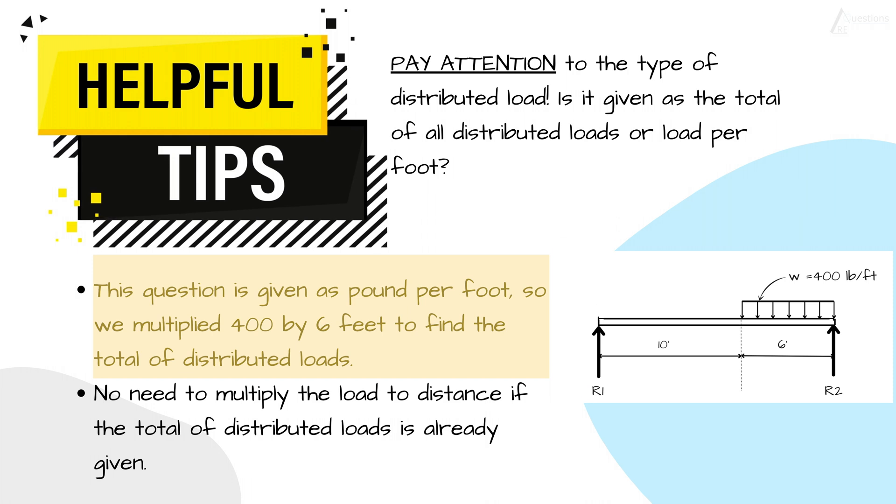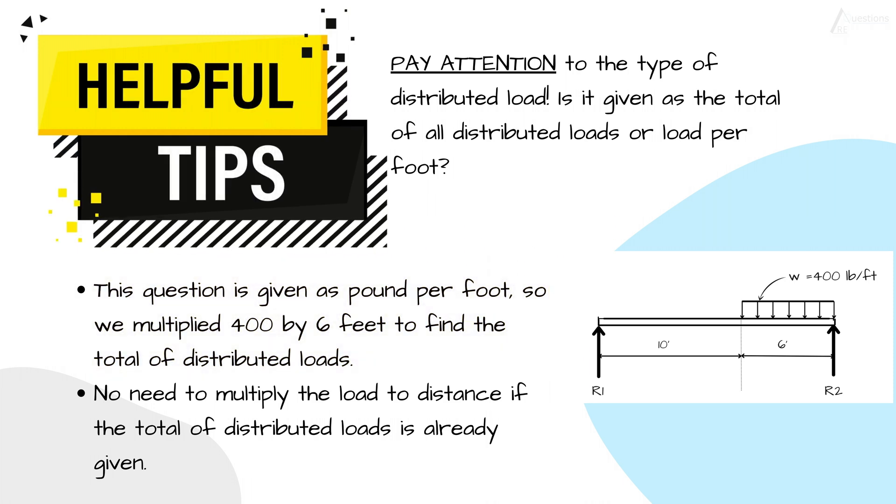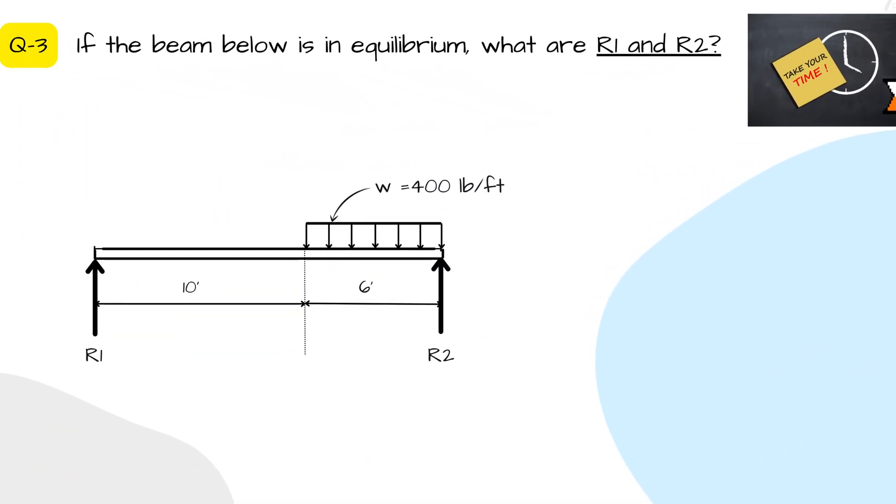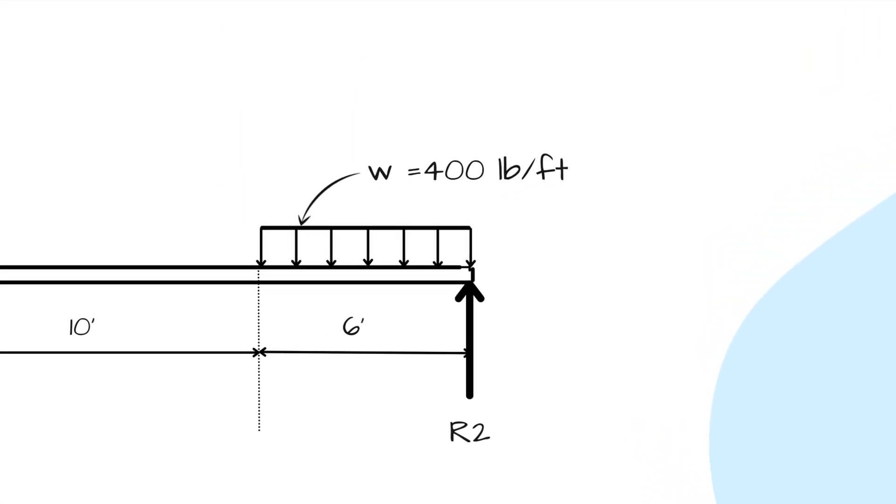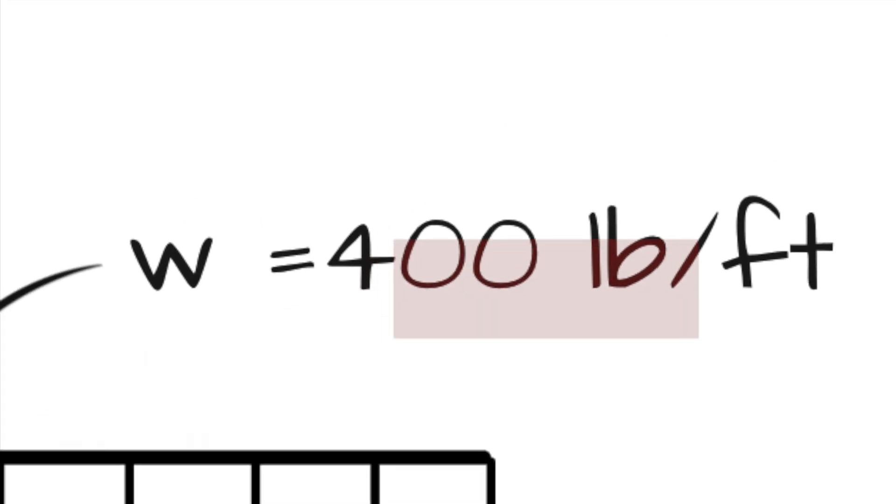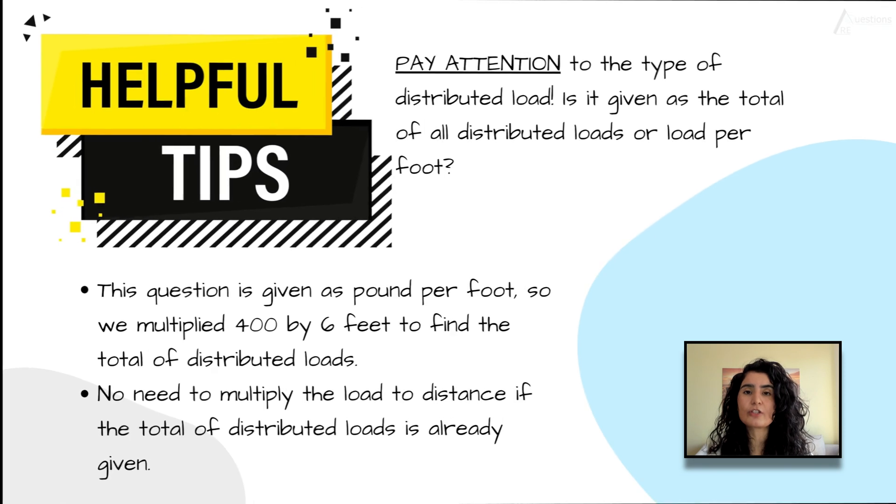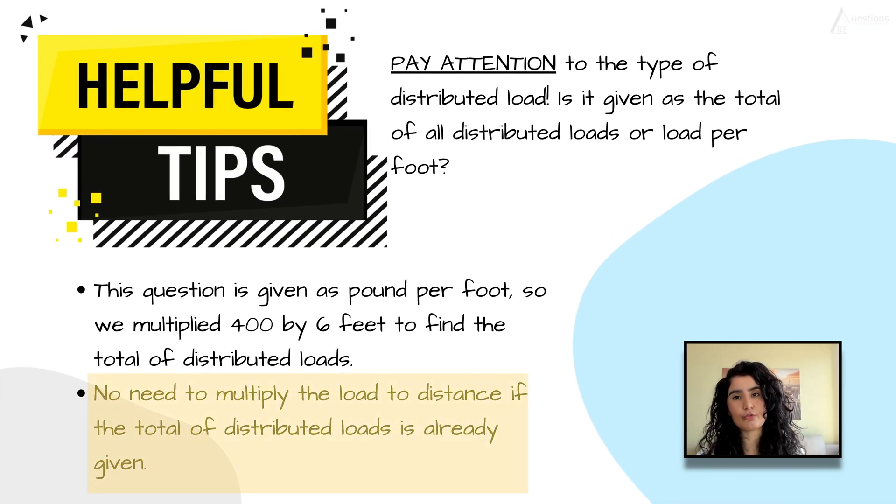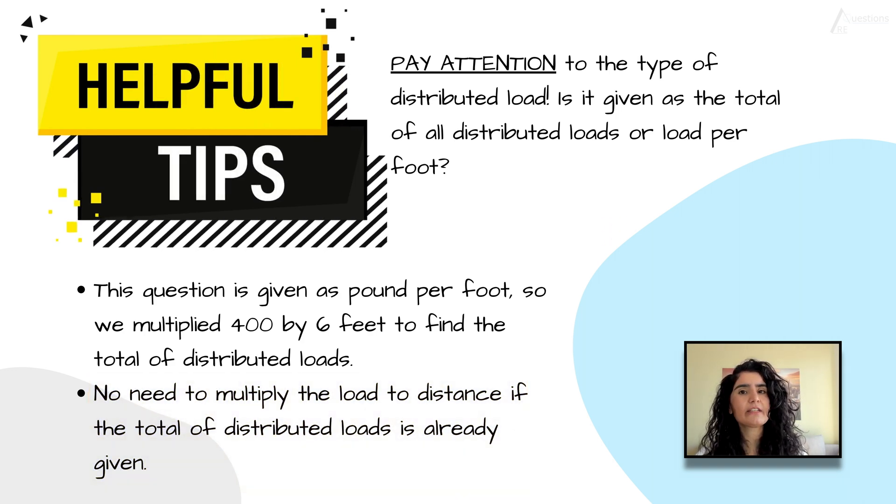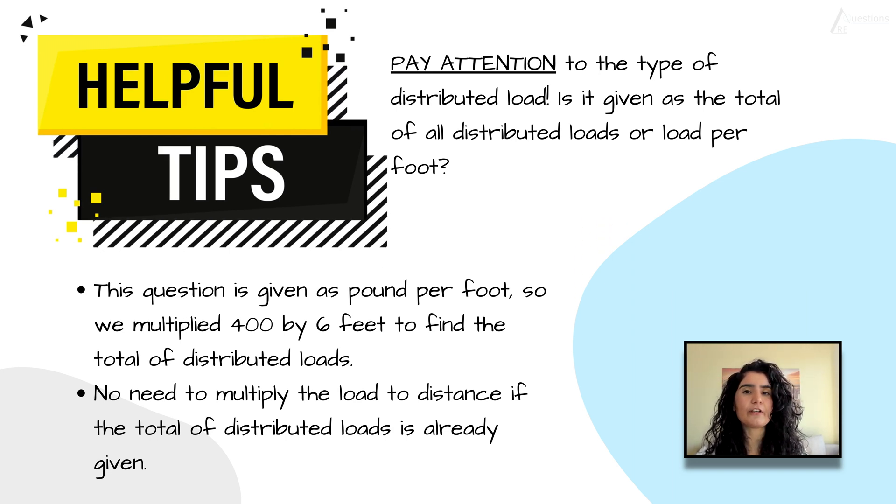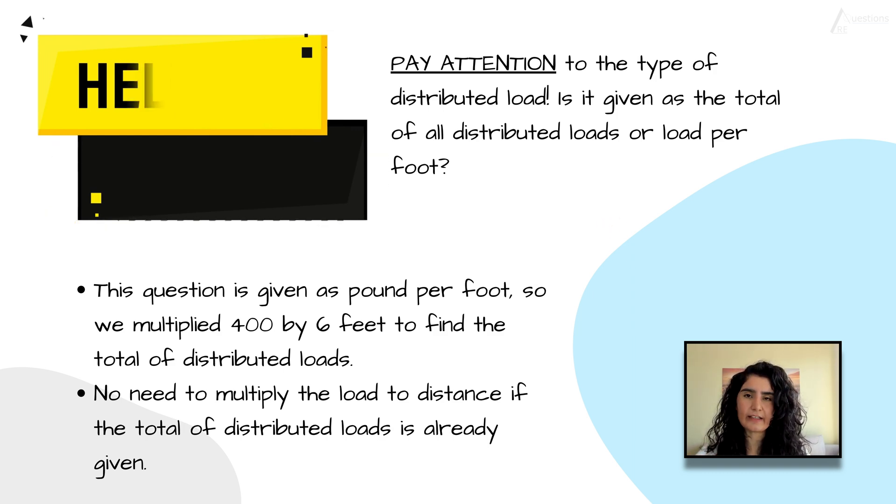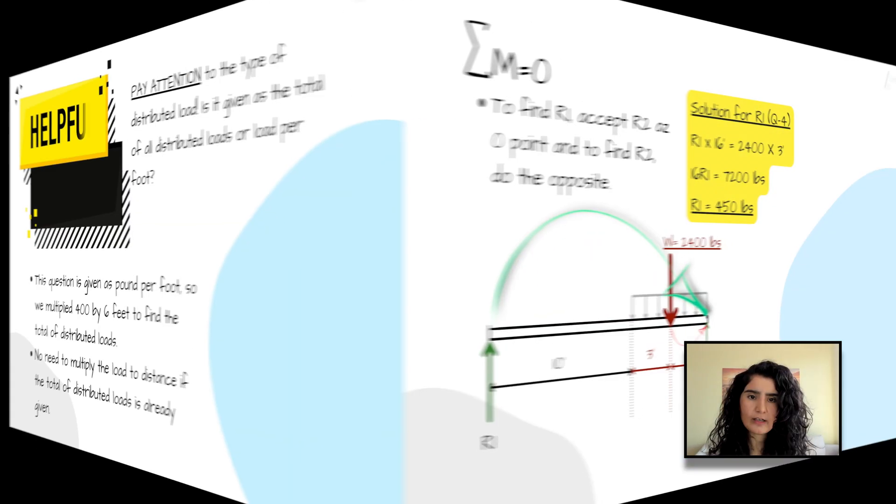There's a little arrow sticking out giving you a number. If that number is just the total load, or if it doesn't say per foot, that means the question already gave you the total load. Pay attention, there is a distinction. Sometimes if it is per foot, they show it with a lowercase w, and if it is the total load, they show it with uppercase W. Always pay attention to the unit and the text. That's where your cue is.